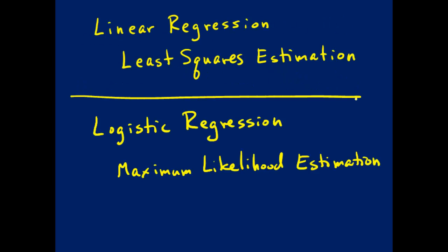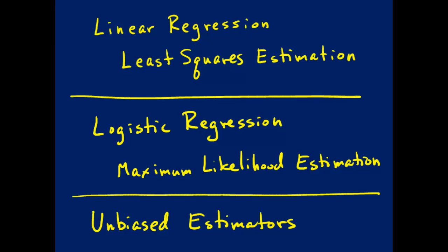So the important thing to remember here is just that linear regression is using least squares estimation to find the orientation of the structural part of the model. And logistic regression is using maximum likelihood estimation. Now one thing that both of these estimation procedures have in common is that they are unbiased estimators. And in the next video we're going to look closer at what that means.